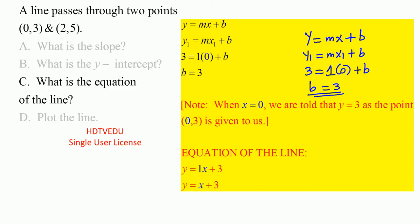So once you have b is equal to 3, go back to y is equal to mx plus b. So you get y is equal to 1x plus 3. And so you see the equation of the line.